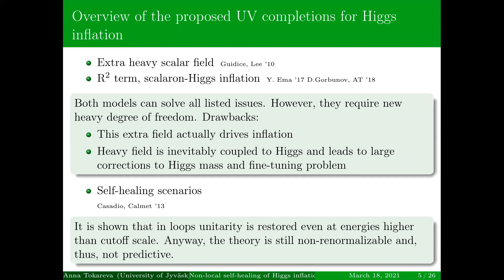Let me briefly review the proposed UV completions for Higgs inflation. It's easy to do by introducing one heavy scalar field coupled to the Higgs, which raises the cutoff scale to the Planck mass. You can introduce one extra scalar field, as was done by Giudice and Lee. Also, you can add an R-squared term to the action, giving the model known in the literature as Higgs+Starobinsky inflation.